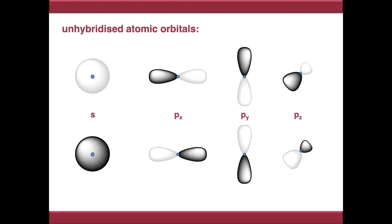In the previous video we saw atomic orbitals, mainly s and p orbitals, and we looked at the different shapes and electron distributions in these orbitals. One of the things we noted was that all of these orbitals can exist as two different phases depending on the phase of their radial distribution function, which I've denoted in these videos as being shaded or unshaded.